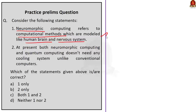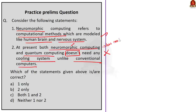Moving on to the second statement: at present, both neuromorphic computing and quantum computing do not need any cooling system unlike conventional computers. This statement is incorrect. Only neuromorphic computers do not need a cooling system. Quantum computers, at present, use cooling systems to keep their temperatures very low. Since statement one is correct and statement two is incorrect, the correct answer is option A — one only.